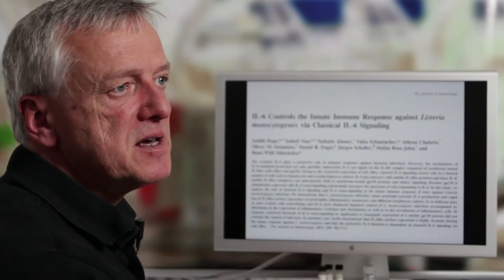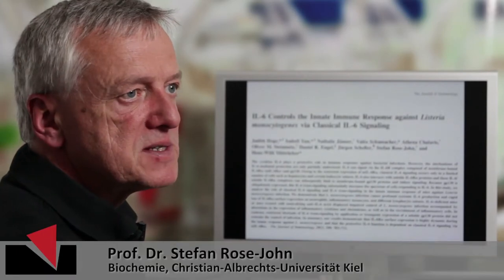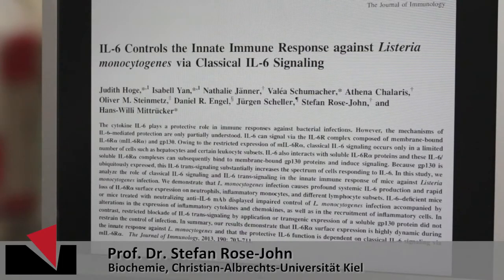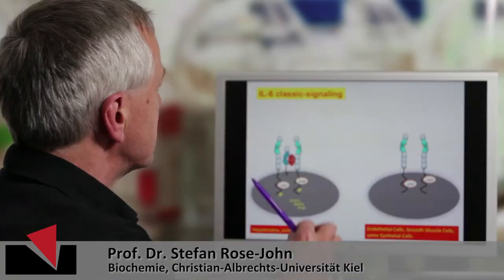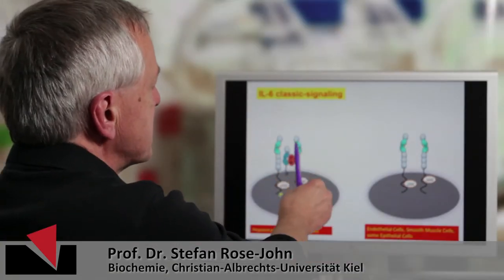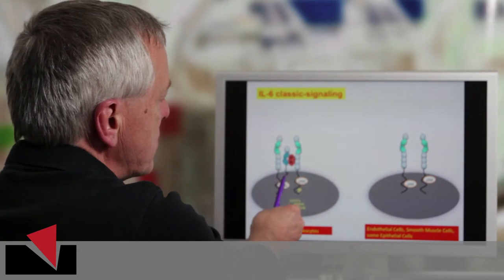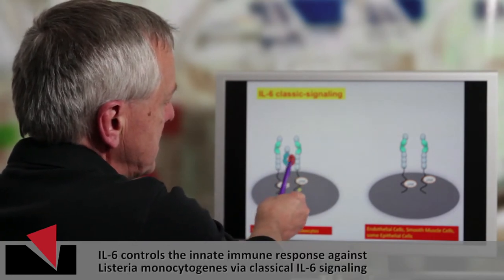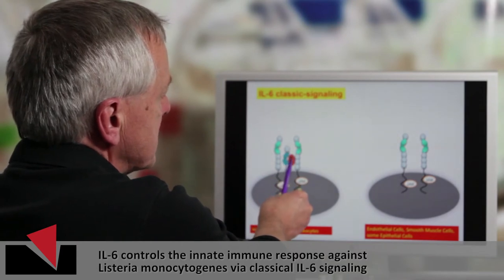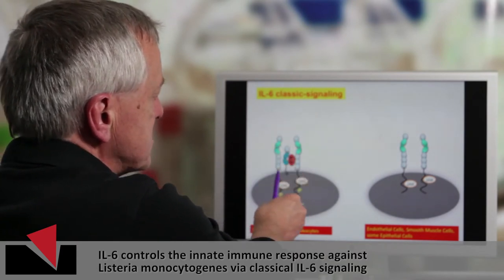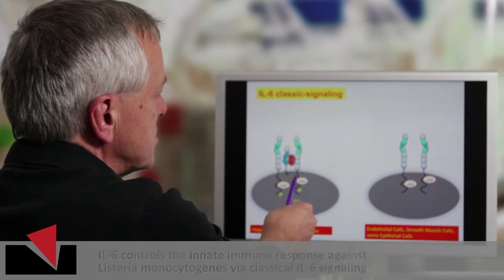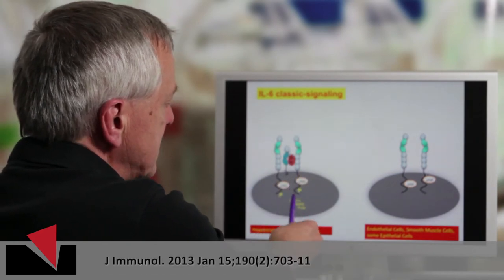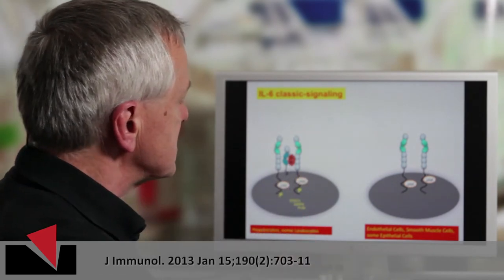This publication deals with the cytokine interleukin-6. Interleukin-6 has two ways of signaling. One we call classic signaling, which is signaling via the membrane-bound interleukin-6 receptor, which is bound, as shown here, to the cytokine IL-6. The signal is generated by a second protein, GP130, which then leads to intracellular signal transduction.